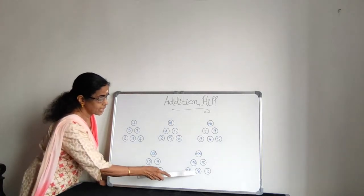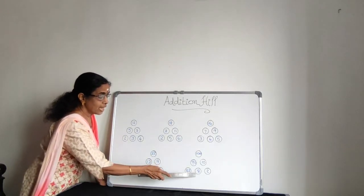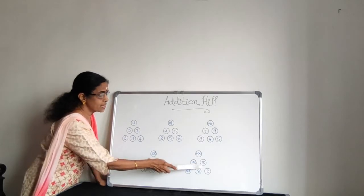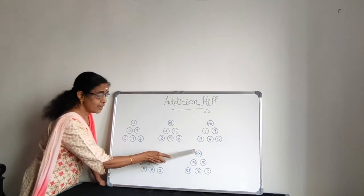82 plus 8 gives 90. 8 plus 2 makes 10. 90 plus 10 gives 100.